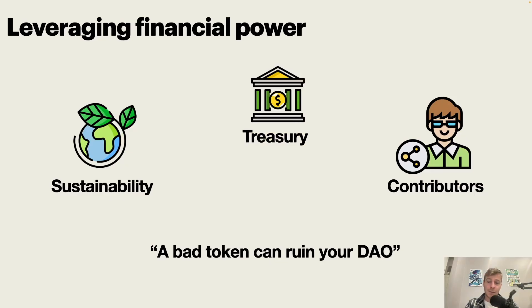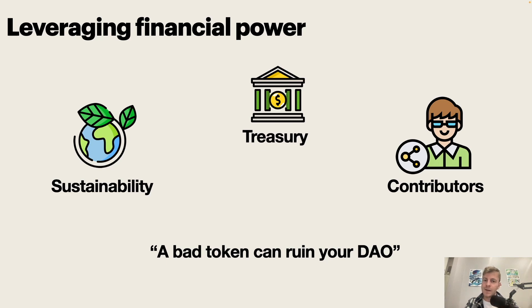A token is absolutely crucial to any DAO. This is how you can create a sustainable organization. But having a token is far from enough to create a sustainable DAO, and a bad token can absolutely ruin your DAO. We've seen in the past a lot of DAOs rushing into launching a token without having any real utility behind the DAO or any kind of structure — and the token crashing, the DAO members getting mad at each other, and essentially signaling the end of the DAO.